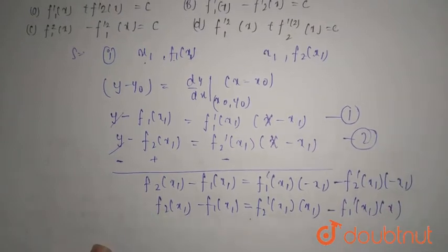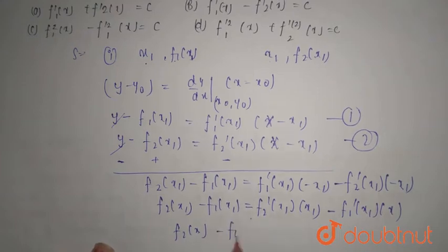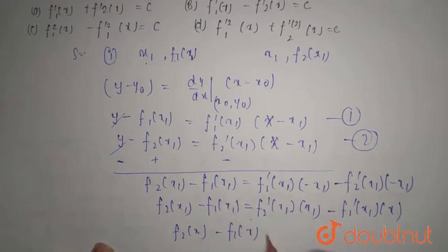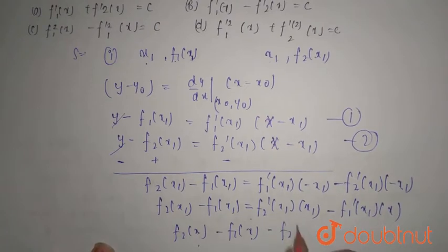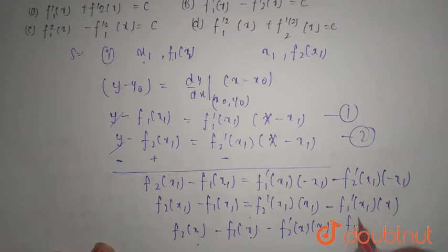Now, here we have this x1 can be written as f2(x) minus f1(x), that is for similar x, equals x times f2'(x) minus f1'(x).